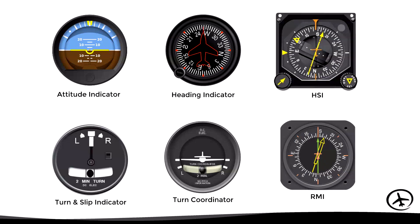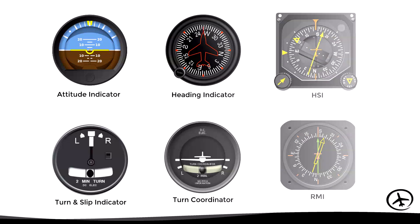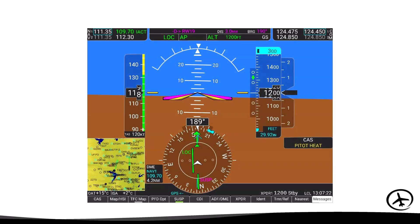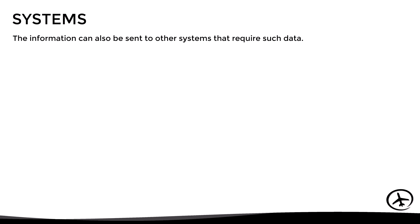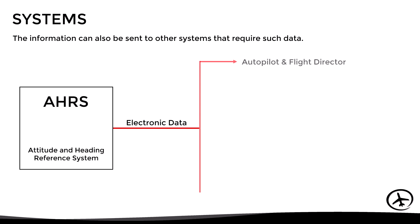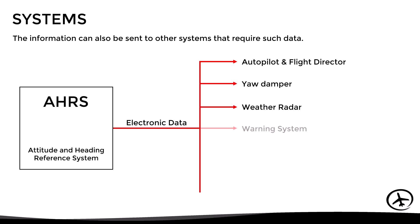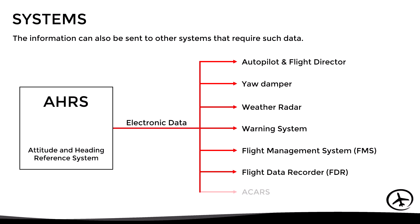Here we see the instruments in their conventional analog presentation. However, normally this unit is used in conjunction with digital instruments, where we can see the attitude indicator, the slip and skid indicator, the HSI, and the RMI. Although the main purpose of the AHRS is to feed the flight instruments, the information can also be sent to other systems that require it, such as the autopilot and flight director system, the yaw damper, the weather radar, the monitoring and warning system, the flight management system, the flight data recorder, and the ACARS.